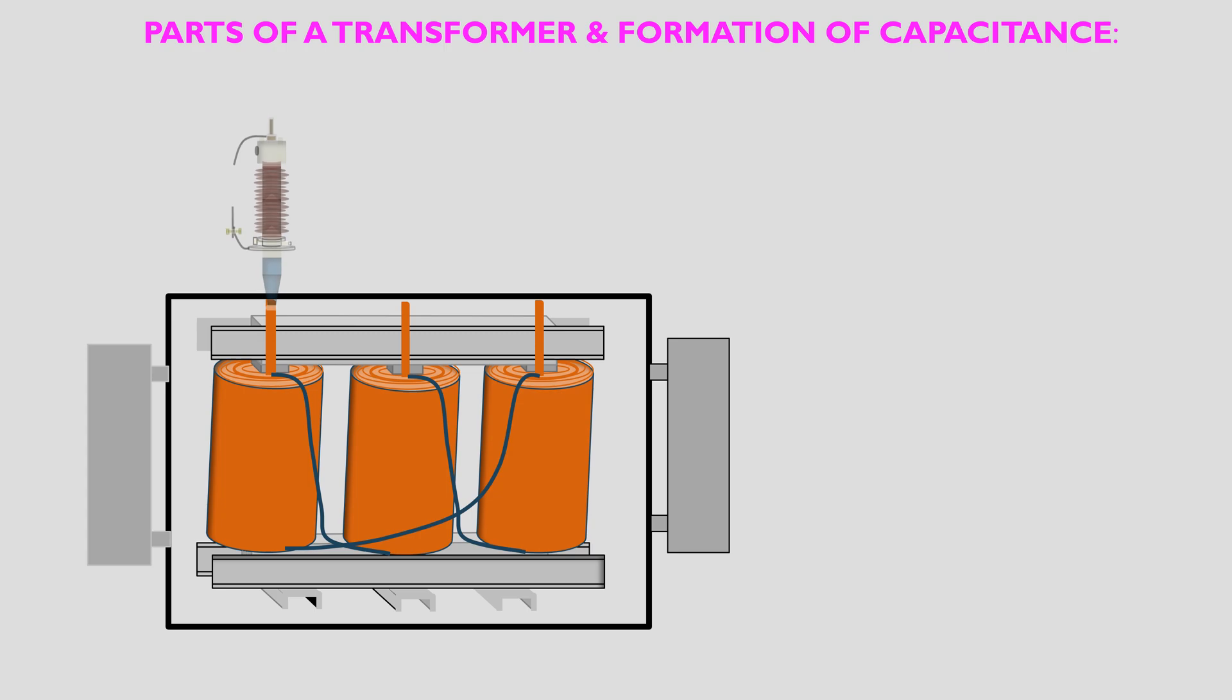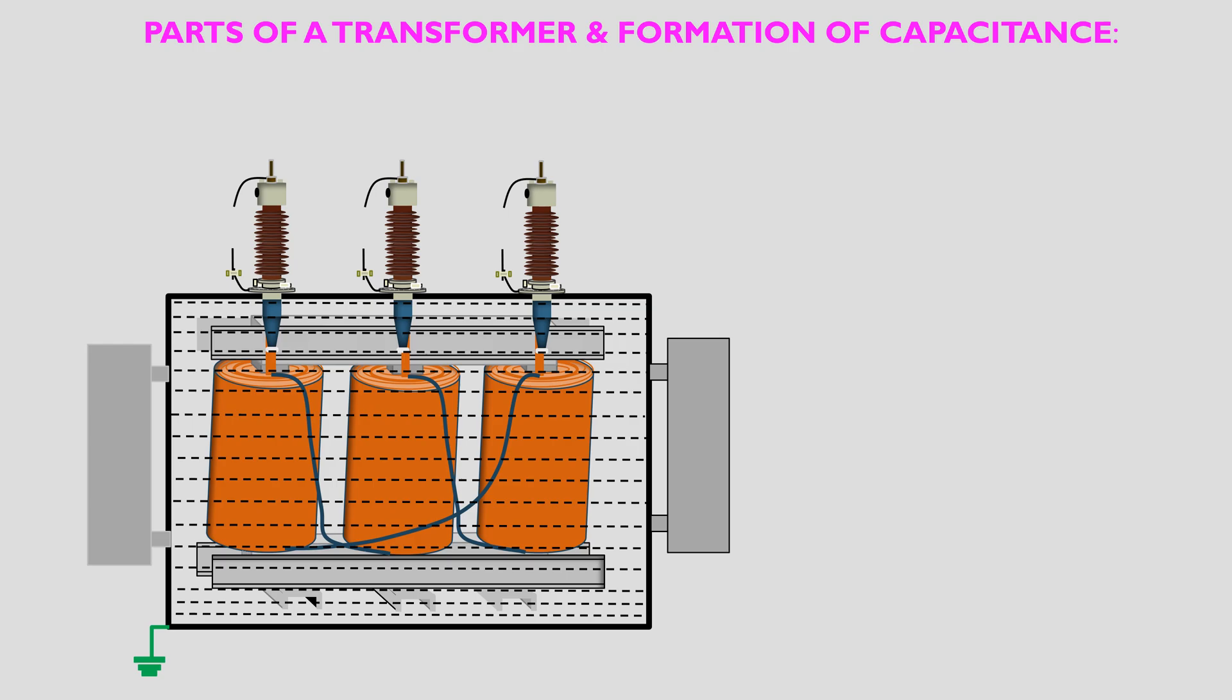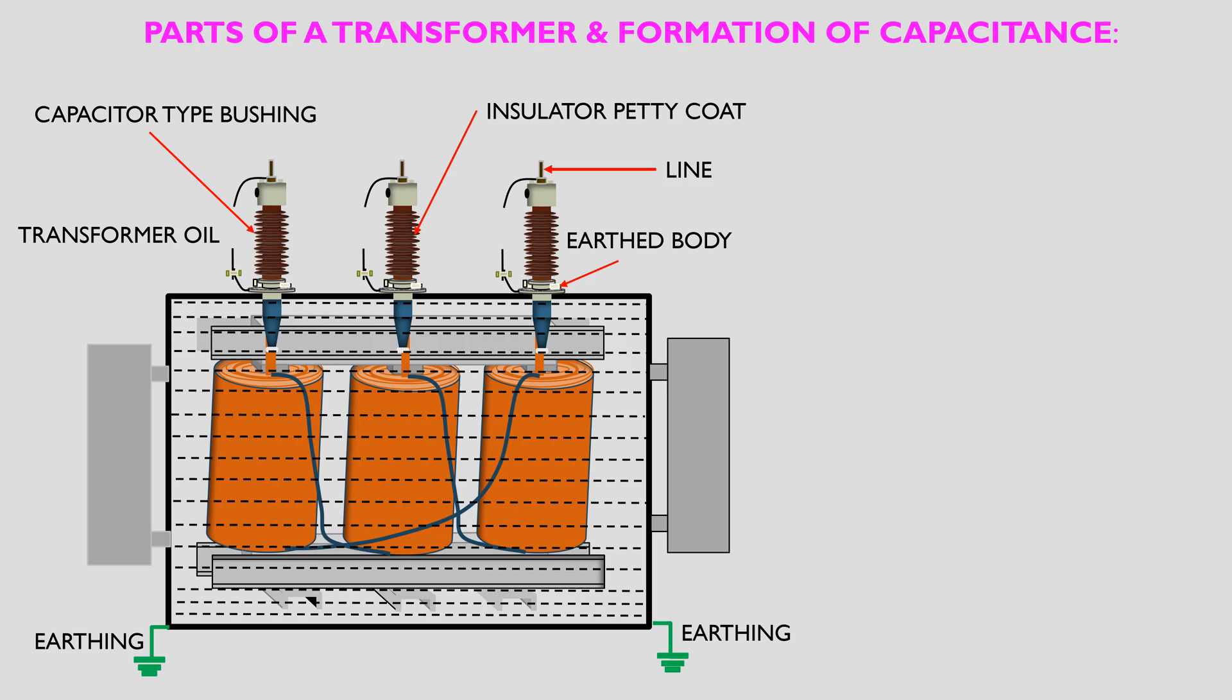This is a picture of a two-winding transformer with three capacitor-type bushings in the HV side. Core and windings are within a tank. Tank is earthed at least at two positions. Tank is filled with transformer oil as insulation. Oil and other insulation like wood, wax, cotton, mica, paper, etc., act as dielectric medium of the capacitors formed within the transformer between any two conducting materials.